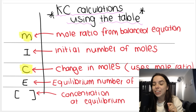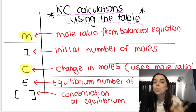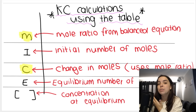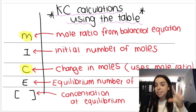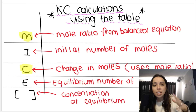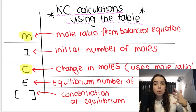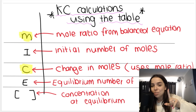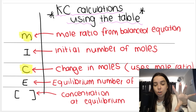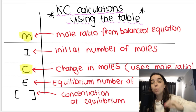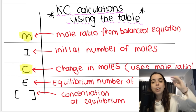In this lesson, we're going to start looking at how to calculate the value of the equilibrium constant, or the KC value, using the table method. You can see behind me I explain the table method. Your teacher might call it ICE, the ICE table, the NICE table, or the MICE table. In this video, we'll be going over a more basic example, and then I'll build up the difficulty throughout the playlist.